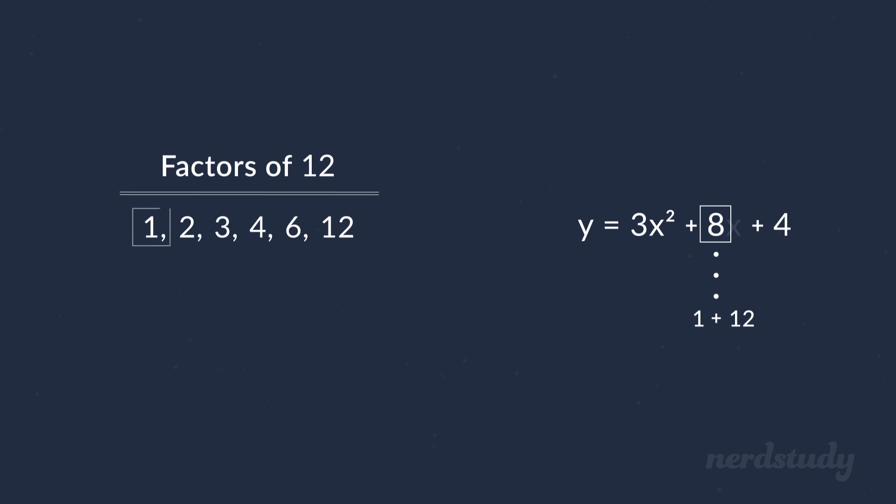So we know that 1 and 12 don't add up to be 8, but we know that 2 and 6 do add up to be 8, so we don't need to continue any further. With 2 and 6 in mind, we just need to split this 8x into 2x plus 6x.